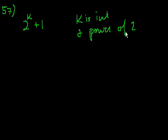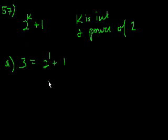Which of the following is not a Fermat prime? Option A, 3. Well, 3 is equal to 2 to the 1 plus 1. And in this case k is 1, which is a power of 2, that's 2 to the 0.